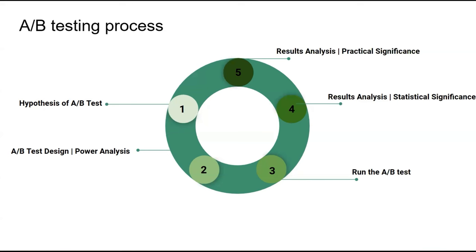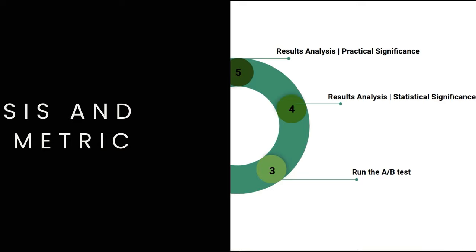The fifth and final step is to continue analyzing results and find out whether, besides statistical significance, there is also practical significance. In this step we use the second step's power analysis assumptions and sample size alongside the fourth step's results to determine whether there is practical significance beside statistical significance. This summarizes the A/B testing process at a high level; in the next couple of lectures we'll go through each step one at a time.